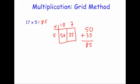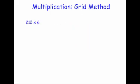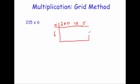Let's try another one now. This time we're going to do 215 multiplied by 6. So again, we're going to do our grid, like so. And we're going to split up the 215 into the 200, the 10, and the 5. And then we're going to put our 6 here. And then we complete our grid, like so.